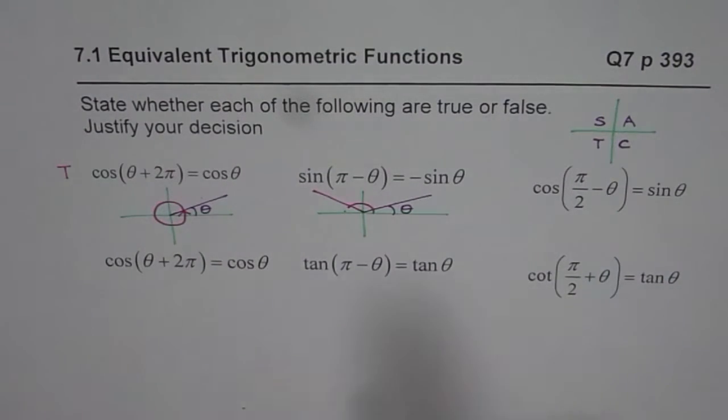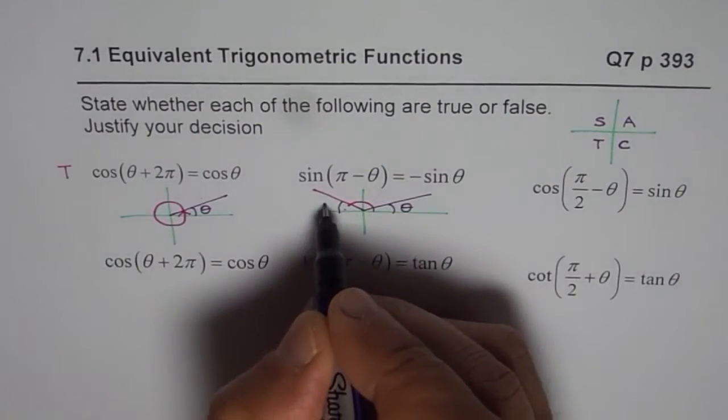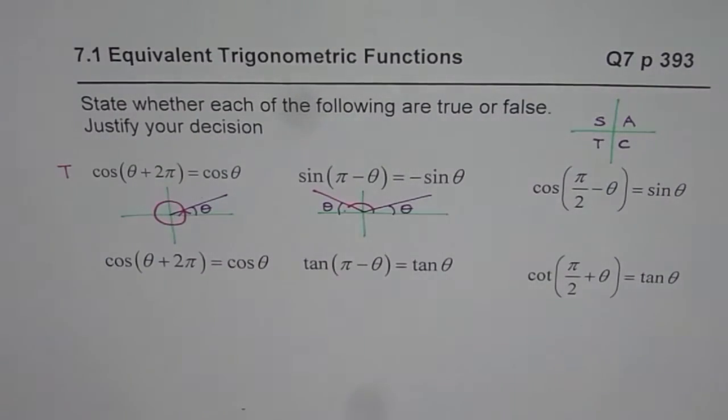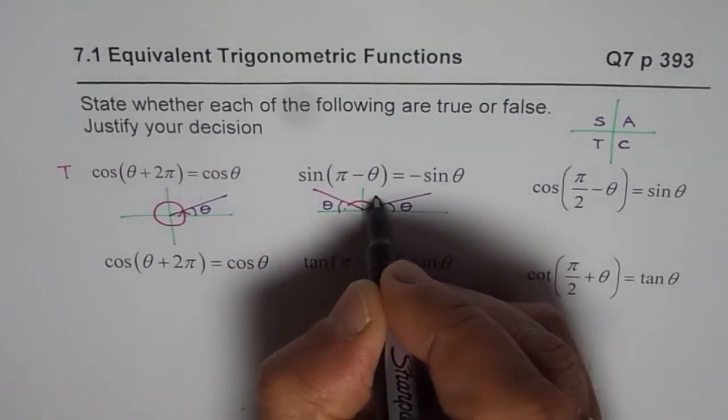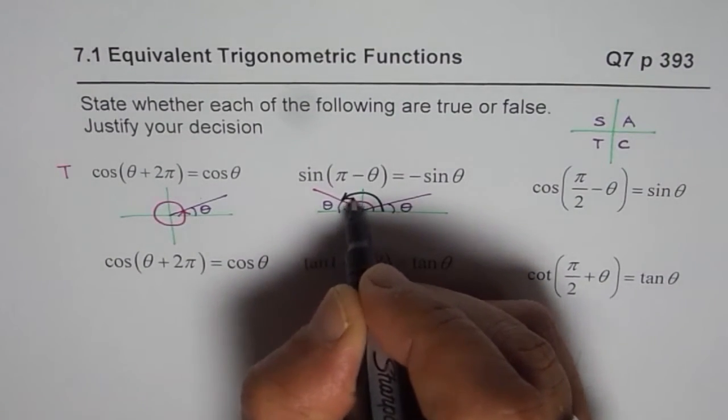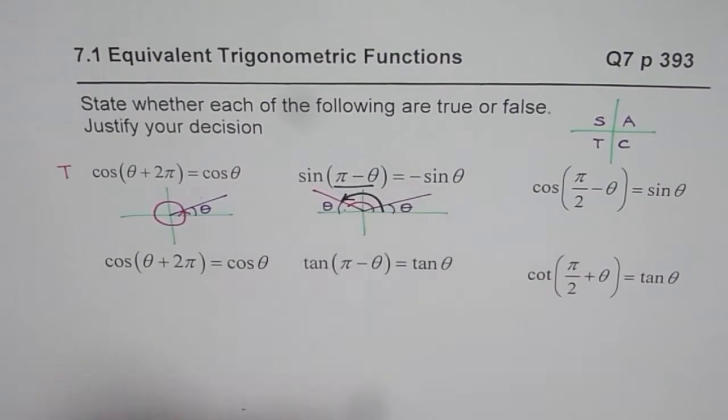So you land up in quadrant two. In this case that is the angle theta. So when I say sin(π - θ), it really means the angle we are talking about this, that is sin(π - θ).